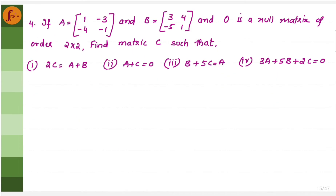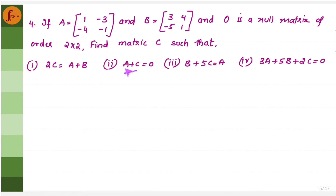Let us take another problem where matrix A and matrix B are given. They have told that O is a null matrix of order 2 by 2. Find matrix C. You have 4 problems here; let us take the second one.